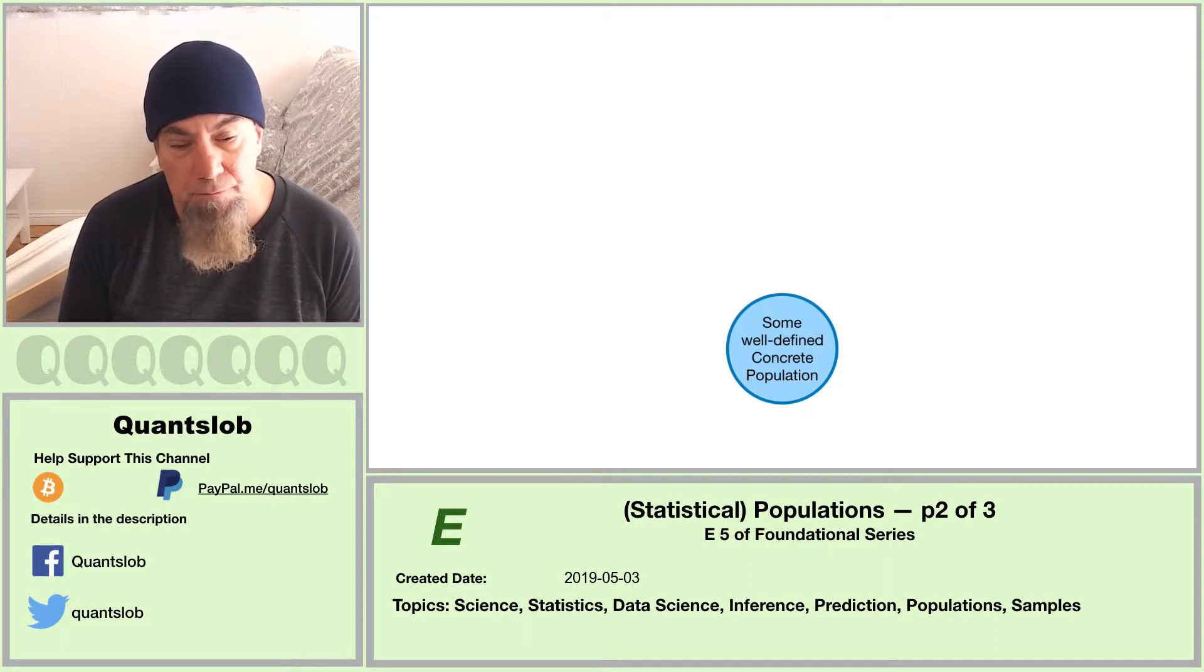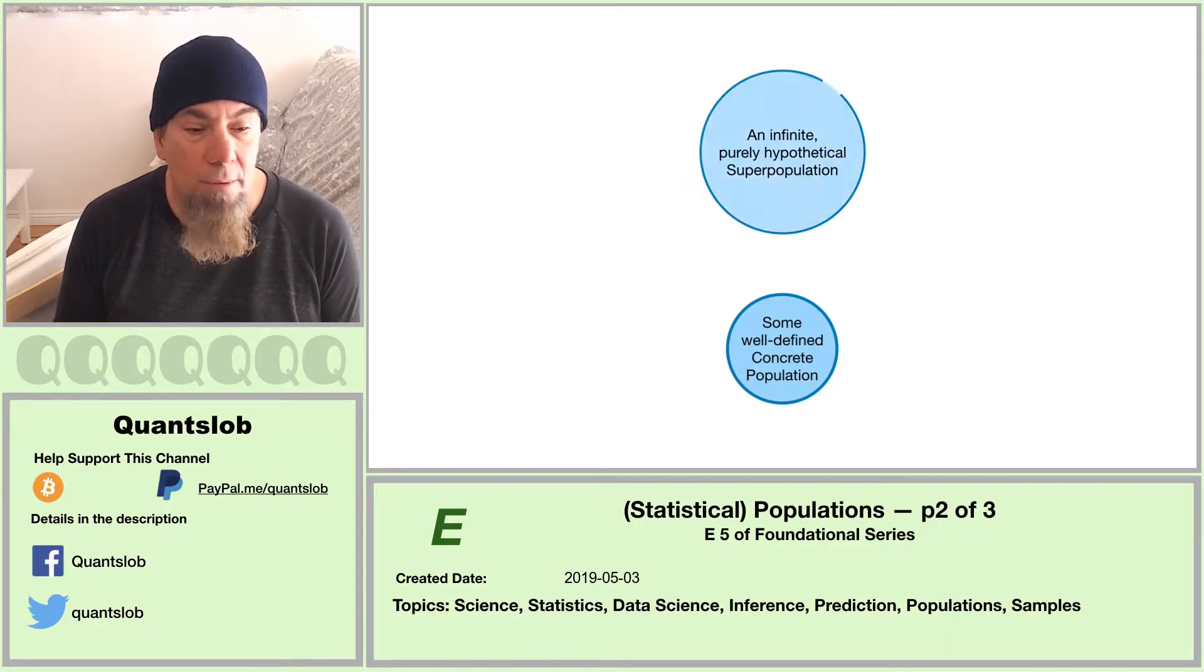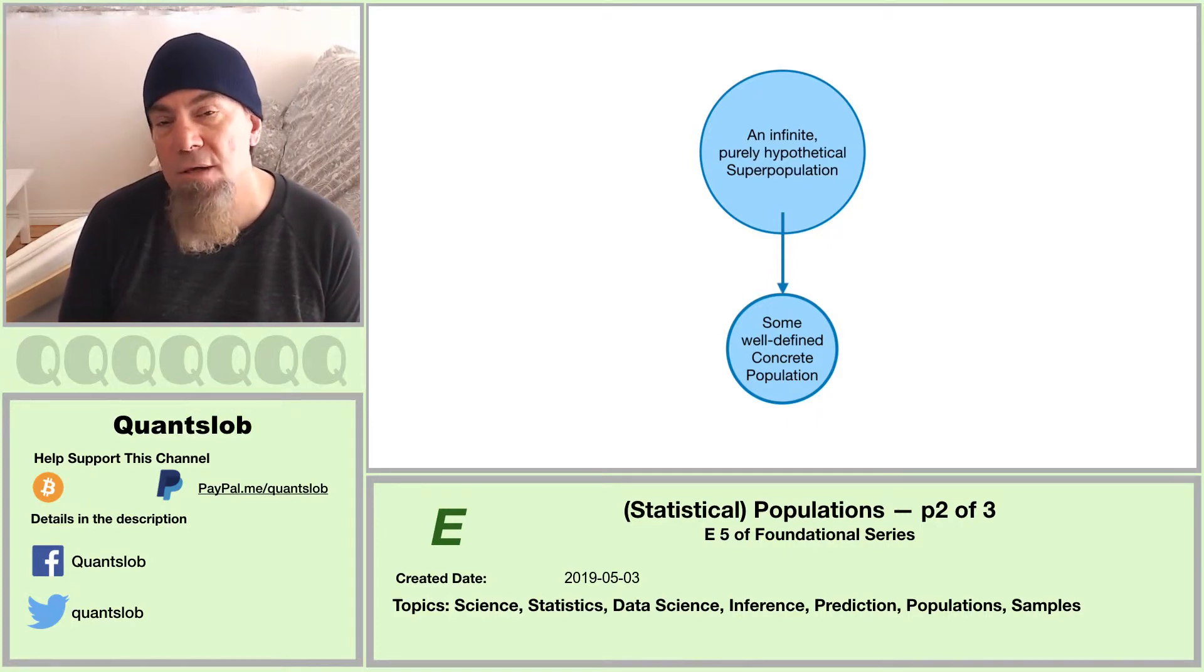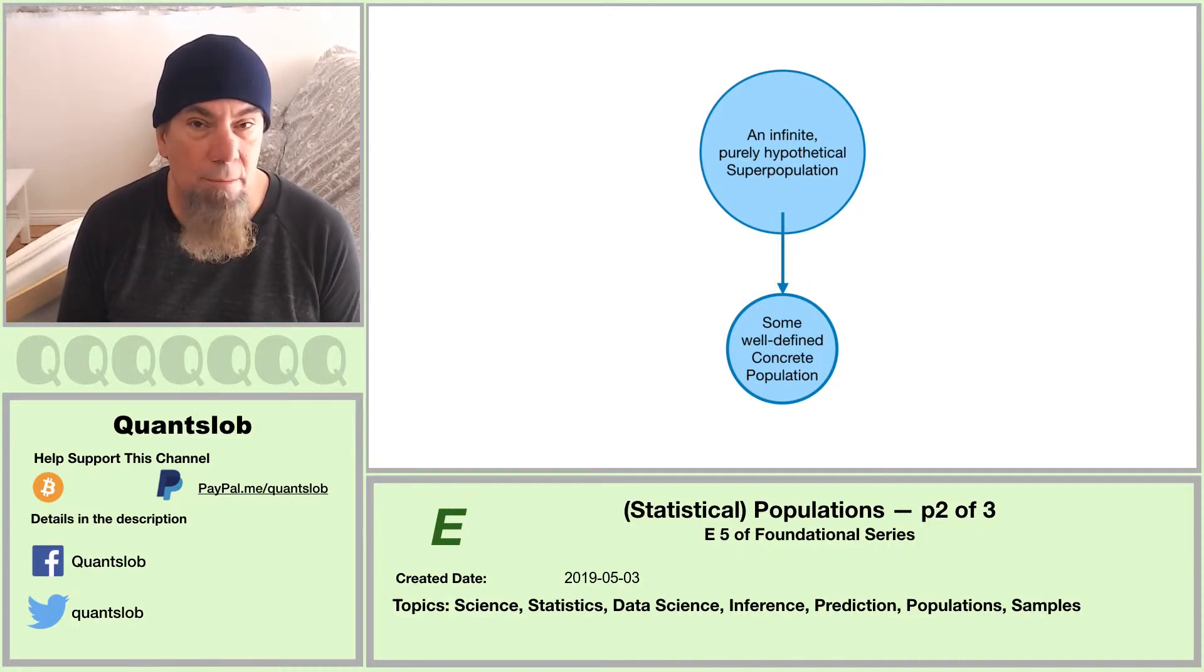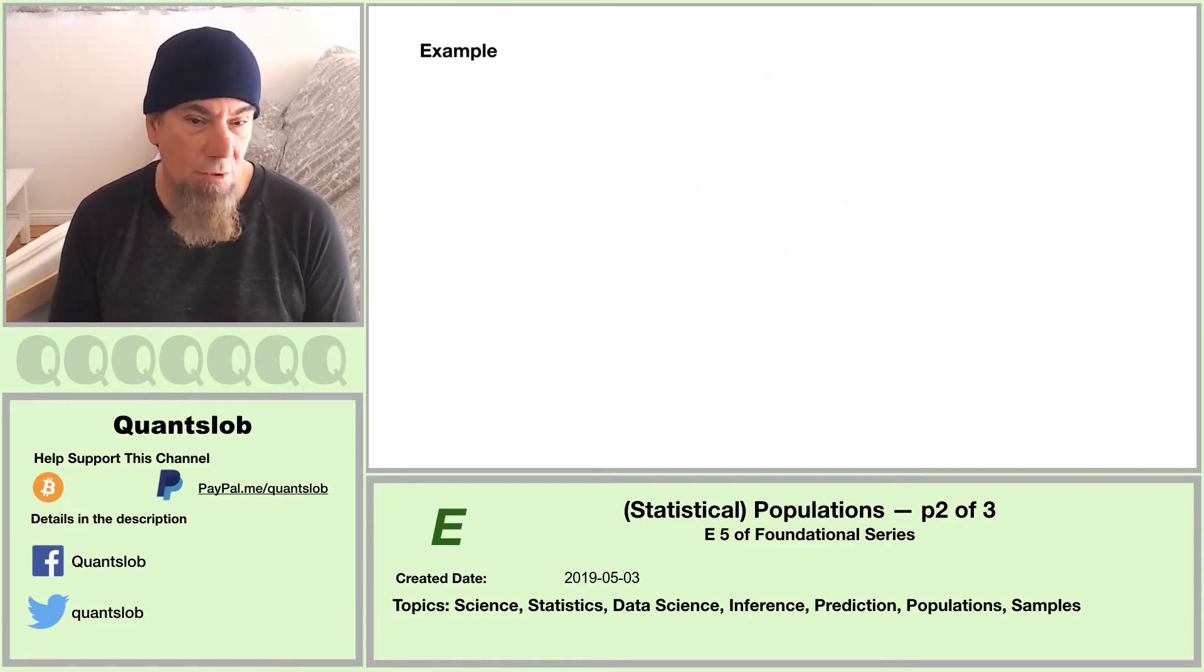What does this mean? A given concrete population had to have been materialized through some process, and we call that process nature. So the question is, couldn't that process or nature just as easily have materialized other concrete populations similar to the one that was in fact actualized?